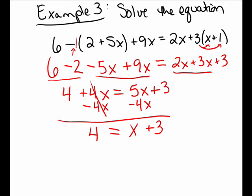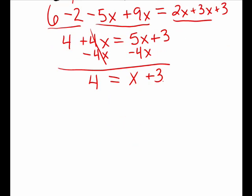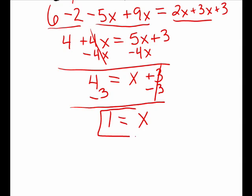I then need to subtract away this 3. I'm trying to isolate x — I want to get x equals a number, so I need to get that plus 3 away from the x. I have x plus 3, then take away the 3, leaving only x on the right. And I have 4 take away 3, leaving 1 on the left. So x equals 1.